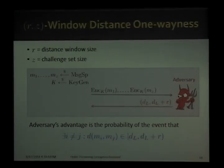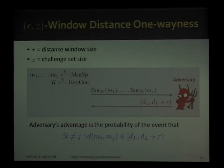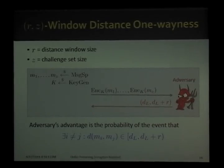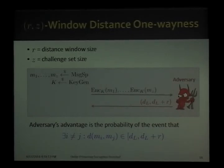The second notion is window distance one-wayness — the distance version of what I just described, also parametrized by R and Z, where R is now the distance window size and Z is still the challenge set size. The security experiment is exactly as before, except now the adversary outputs a distance window of size R. The adversary's advantage is the probability that, for some two distinct messages, their distance lies in the distance window — essentially measuring whether an adversary can find the distance between any two challenge messages to within a window of size R.